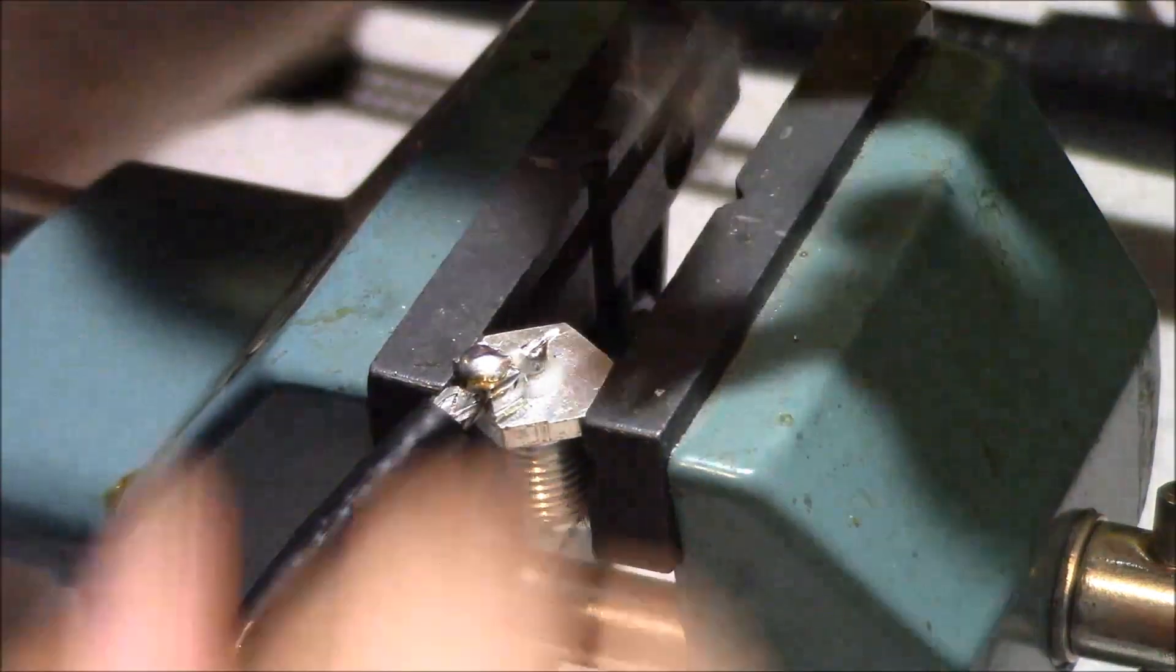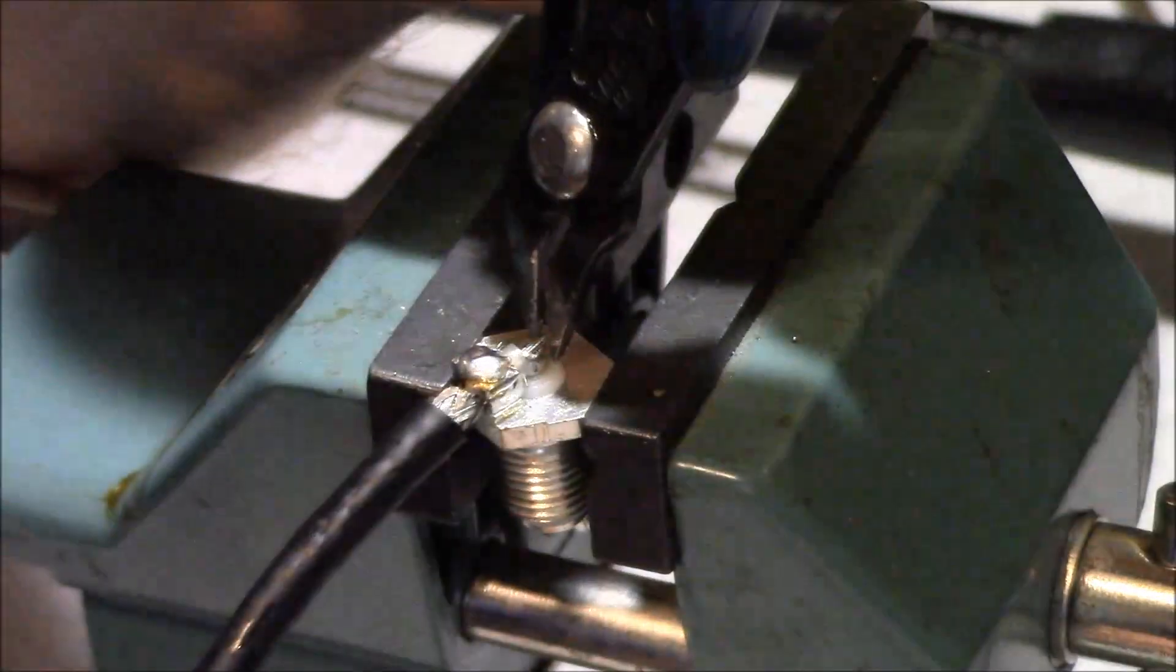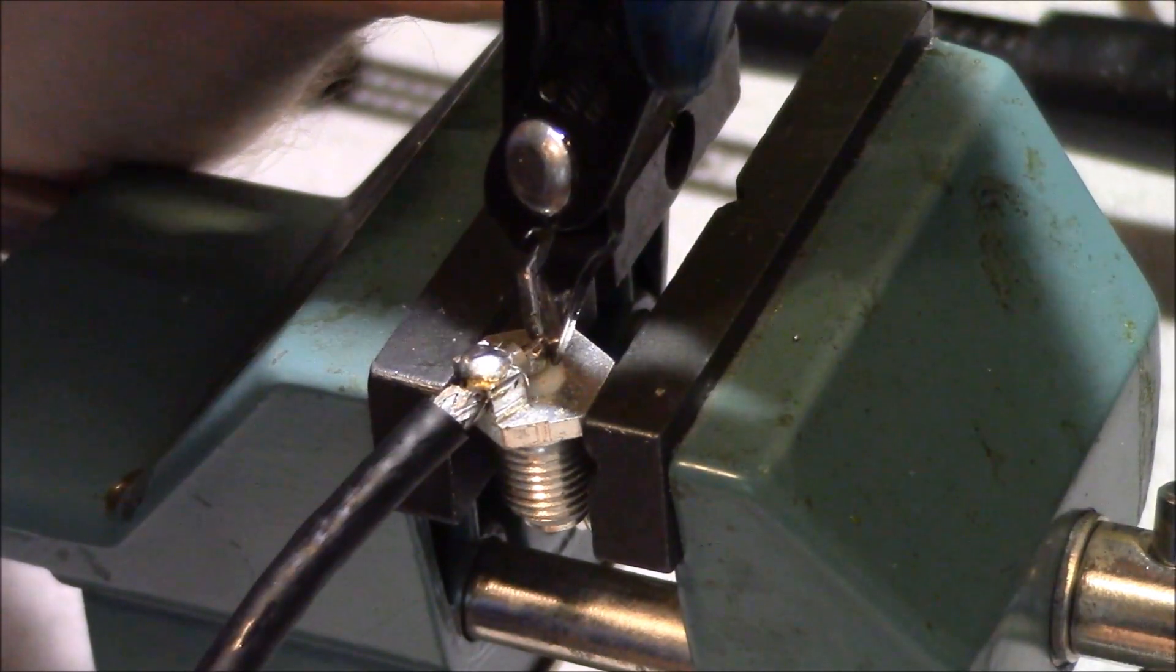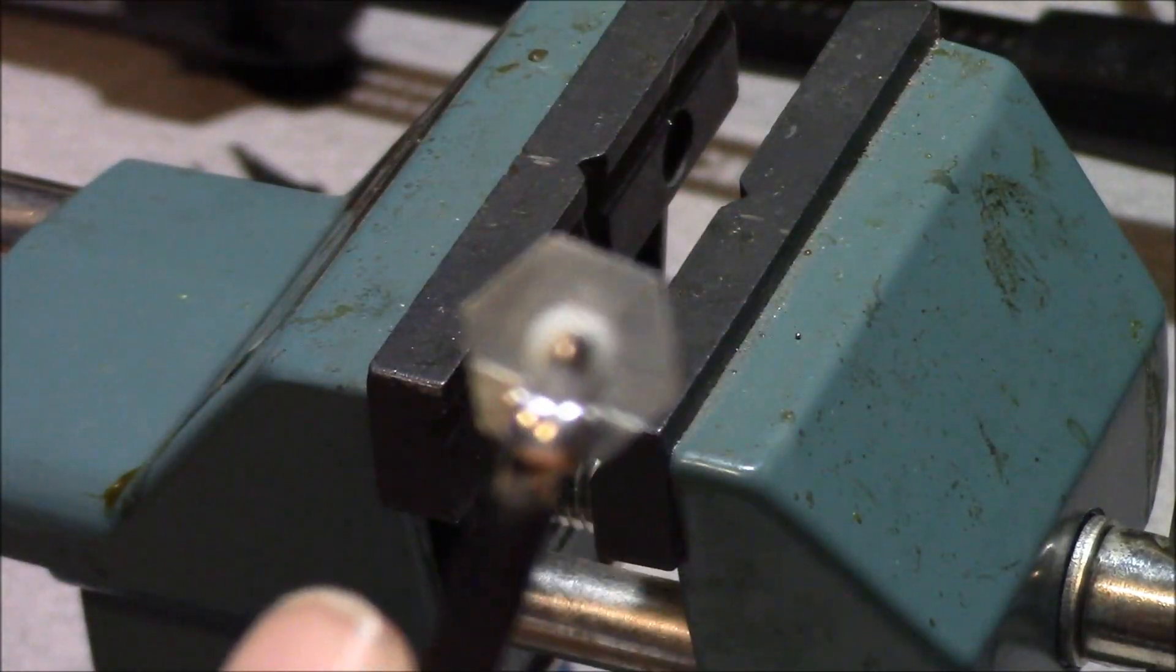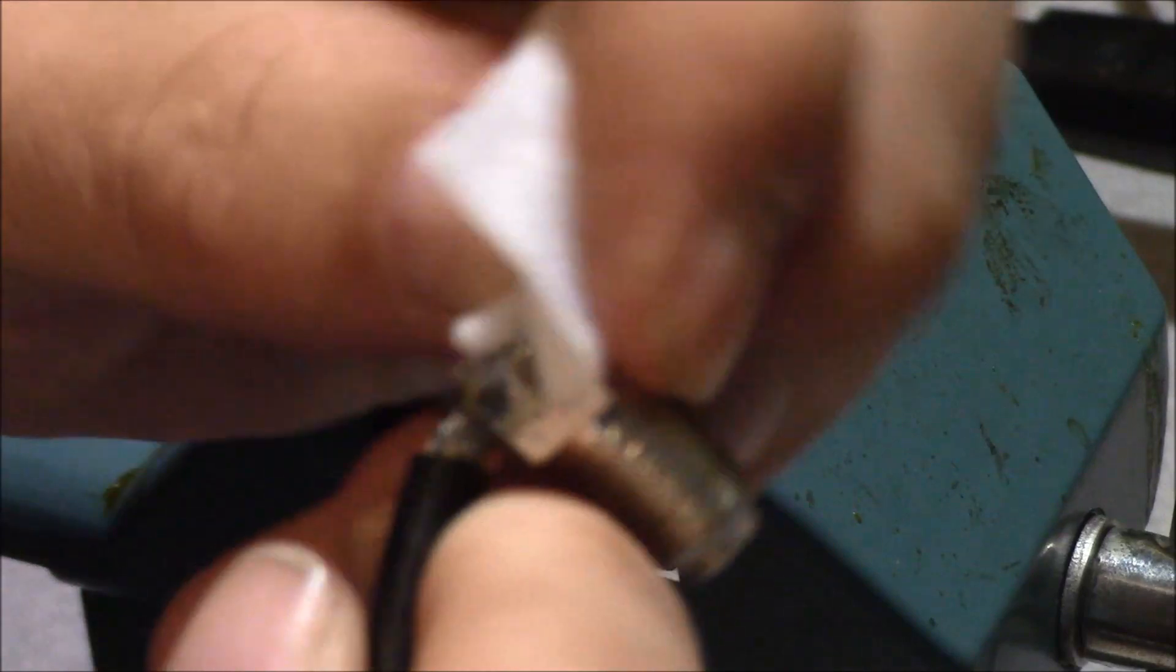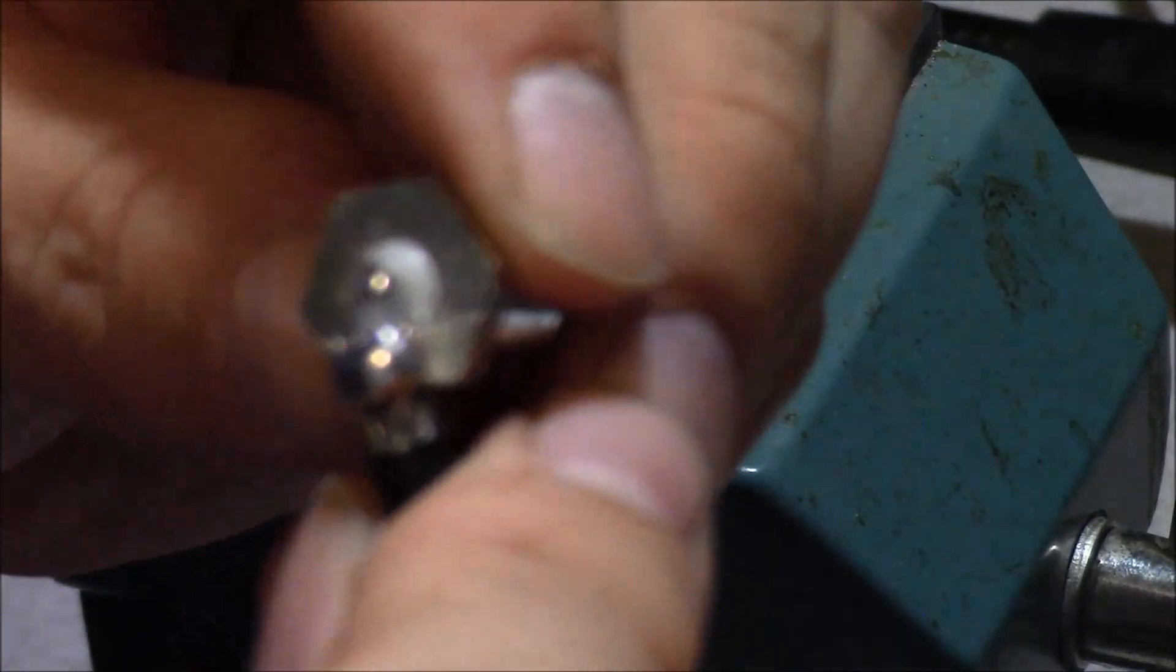Take your precision cutter and cut off your center conductor, even with the post. Now inspect your work. And clean off the flux with the prep pad. And check your work for a second time.